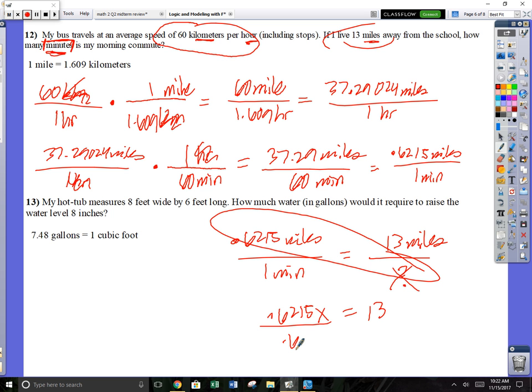Now you can just cross multiply. 0.6215x equals 13. You're going to divide that by 0.6215. Take 13 and divide it by 0.62, and you are going to get x is 20.917. That is how many minutes it's going to take for that morning commute.